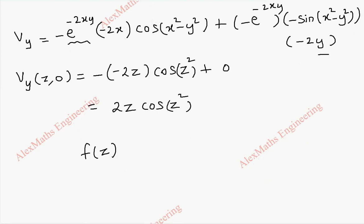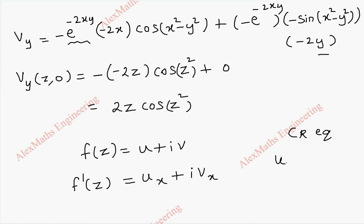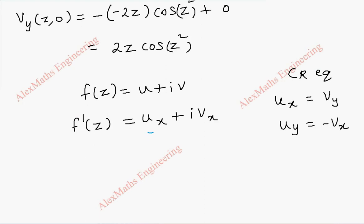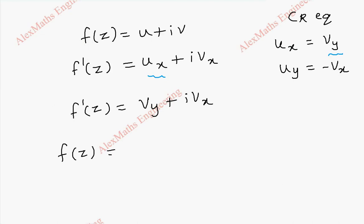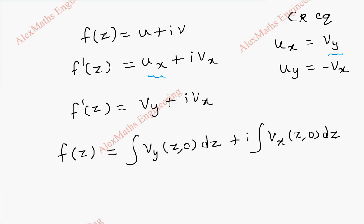After this, we write f of z, which is u plus iv. And f prime becomes ux plus ivx. Using the Cauchy-Riemann equations, ux equals vy and uy equals minus vx. So we replace ux with vy, and thus f prime becomes vy plus ivx. Therefore f of z equals the integral of vy of z comma 0 dz, plus i times the integral of vx of z comma 0 dz.